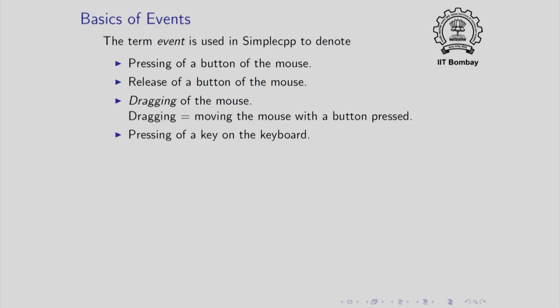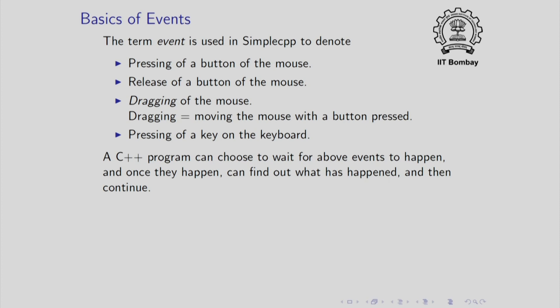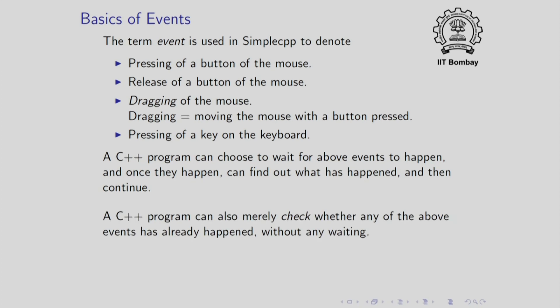Pressing a key on the keyboard is also an event. A C++ program can choose to wait for all of these events. Once one such event happens, the program resumes and can find out what event has happened and accordingly take action. Instead of waiting for an event, a C++ program can also query whether any event has happened. Notice that checking does not involve any waiting whatsoever — it is really asking, at the point at which I am checking, has some event already happened.